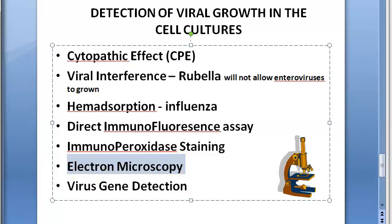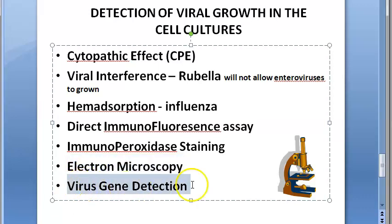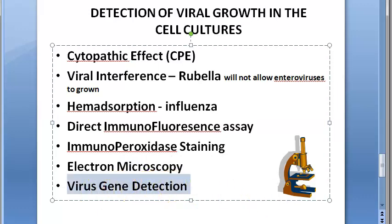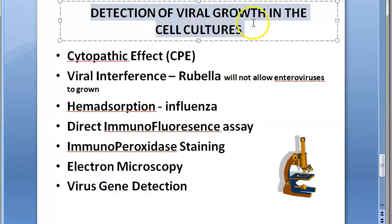Electron microscopy is a very high-resolution microscope where you can directly demonstrate the virus itself. For virus gene detection, you go to the level of nucleic acid, using PCR or nucleic acid probes to detect the virus gene directly. This is highly specific because you are detecting the gene itself.